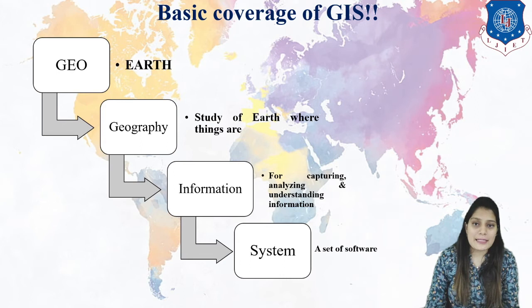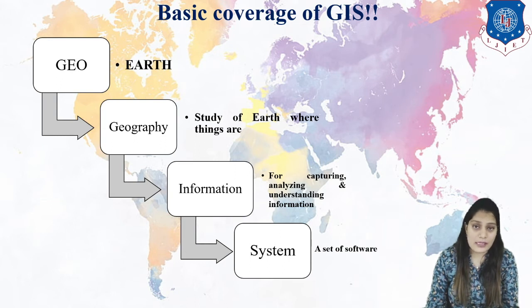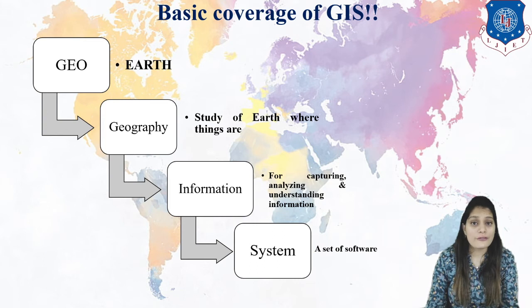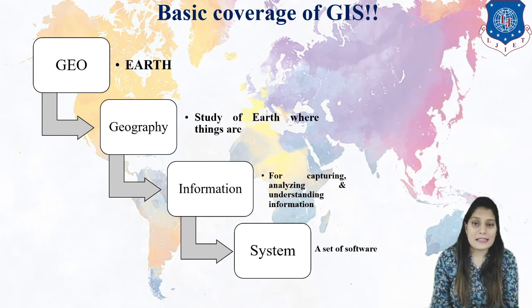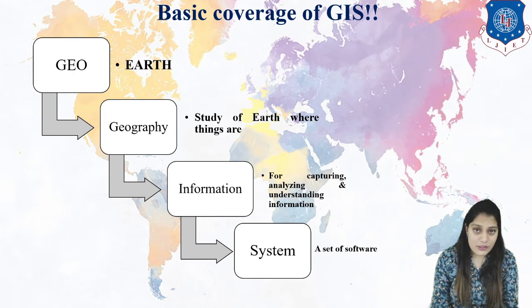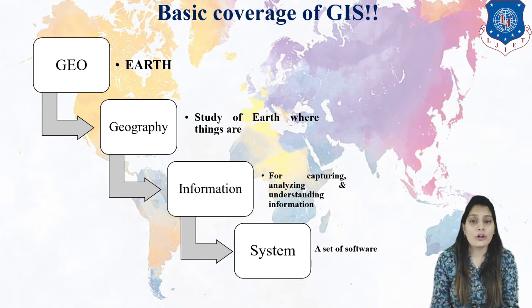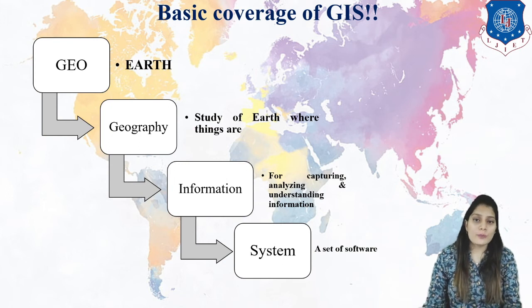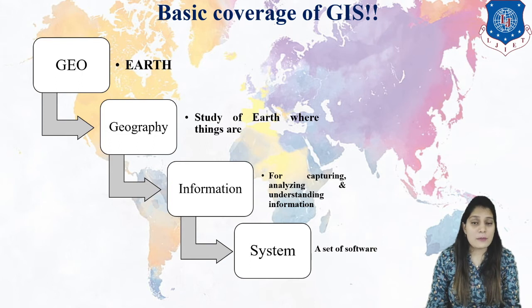Similarly, after geography we have information capturing. We need to have various pieces of information only then we can do the analysis. In the previous map, you can see the data related to water supply points, water pumps, water connections, and well points — from where water is distributed. John Snow marked through which line and point how many patients were being affected. He located those points and then did the analysis to find which connection had more contaminated water. We have various informations which we gathered and then did the analysis. Lastly, we have the system — a set of various softwares which help to do the various analyses.